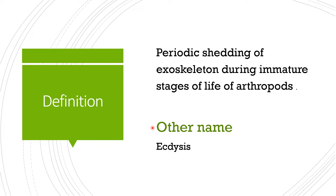Molting can also be called ecdysis. The reason it is called ecdysis is because of the main hormone that plays an important role in this process — that hormone is named ecdysone. Because the hormone is called ecdysone, the process of molting is also named ecdysis.